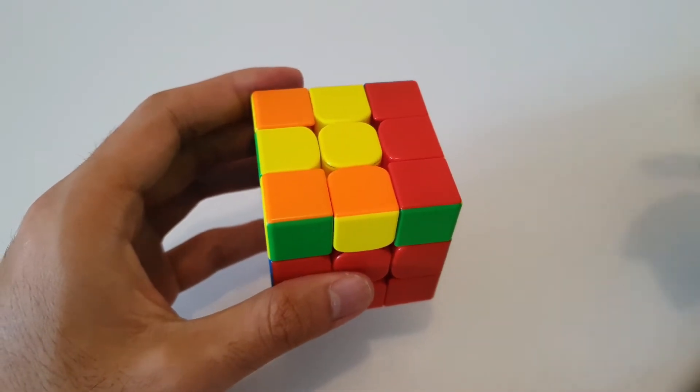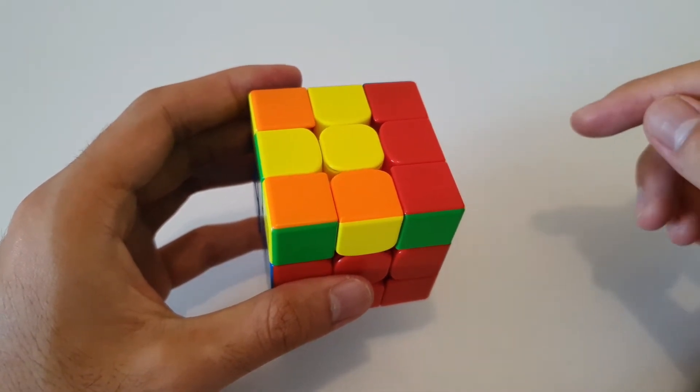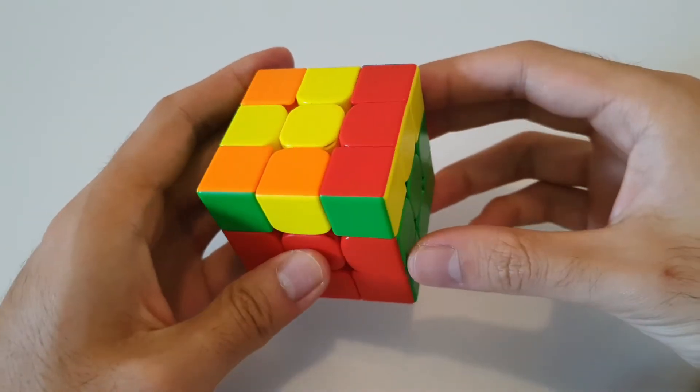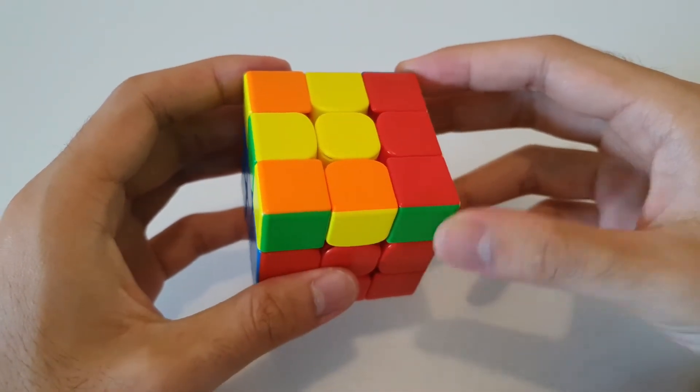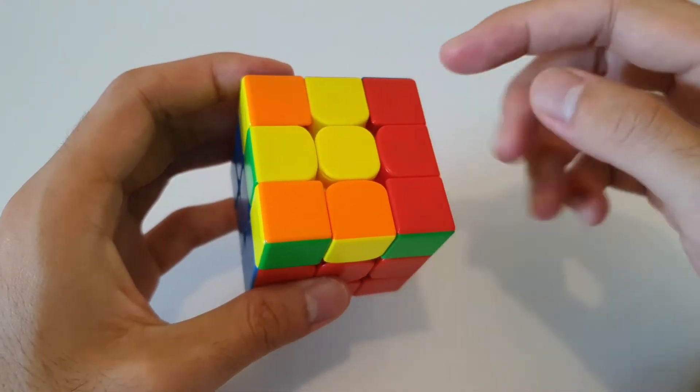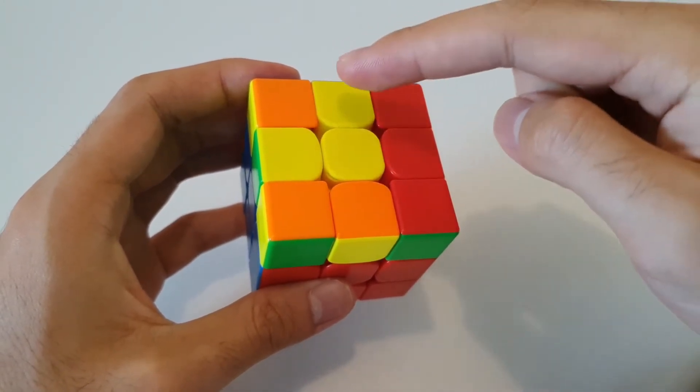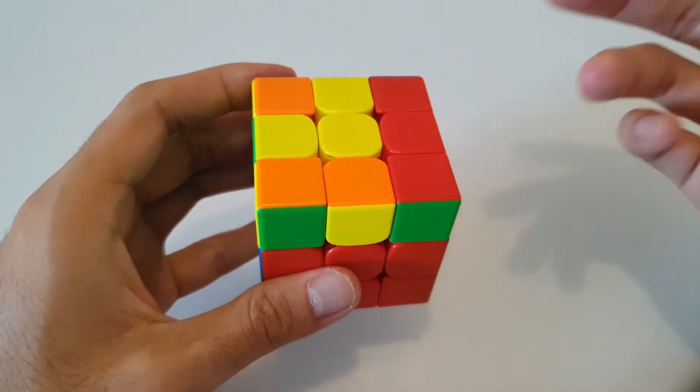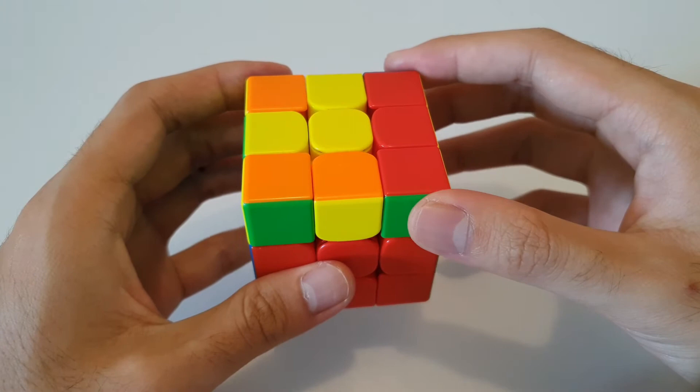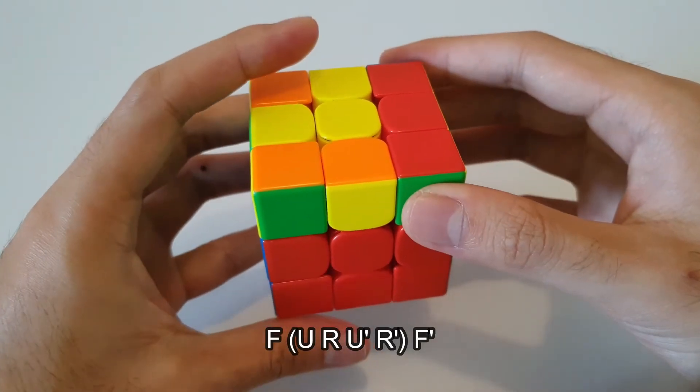So the second possible case that you can get when you get to this step is the L shape. So when you get the L shape, there's a couple different ways you can do it. The one that I would recommend is this case where you hold the L at the back left hand side, and you can do this algorithm, which is really similar to the previous algorithm, it's F inverse sexy, F'.